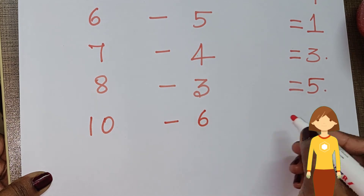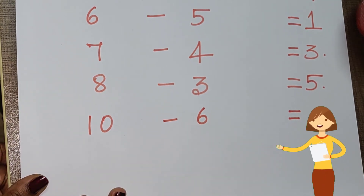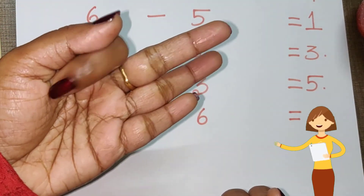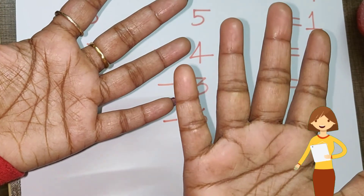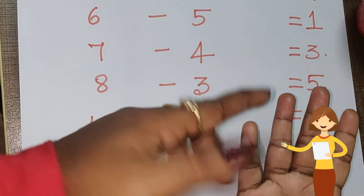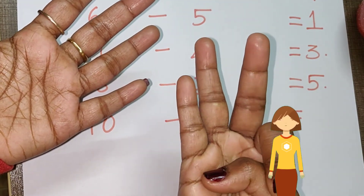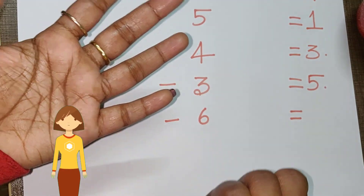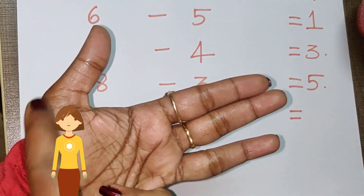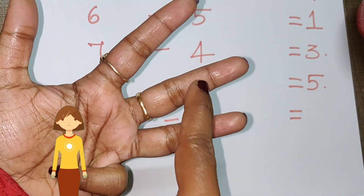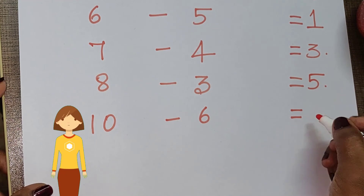Another problem: ten minus six is equal to dash. Ten fingers in hand — one, two, three, four, five, six, seven, eight, nine, ten. Close six fingers — one, two, three, four, five, six. Remaining open fingers: one, two, three, four. So the answer is four.